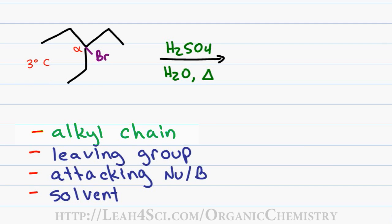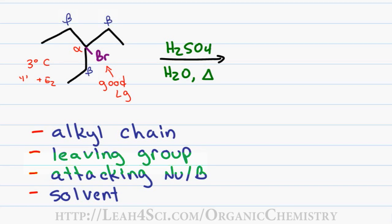While SN2 cannot take place with a tertiary leaving group, we can't rule out the E2 reaction. For elimination reactions, you also want to confirm that beta carbons have hydrogens available for removal. Next, we look at the leaving group: bromine forms a stable anion in solution and is a good leaving group that can depart by itself, allowing both one-type (SN1/E1) and two-type (SN2/E2) reactions.